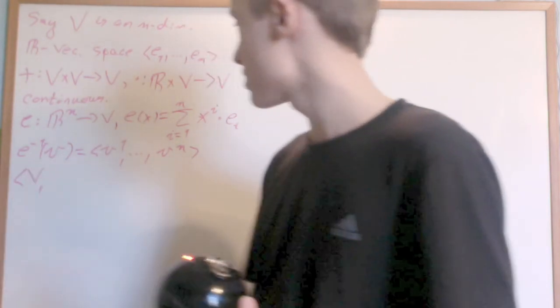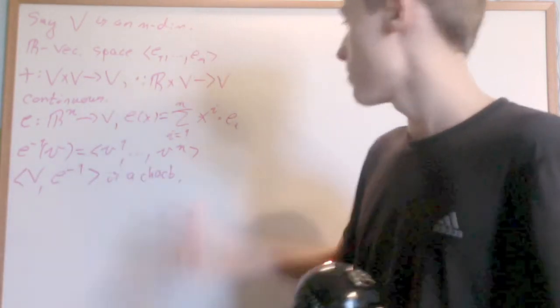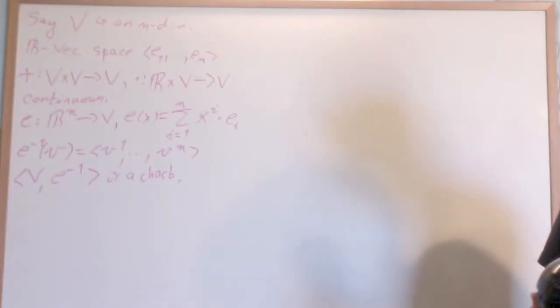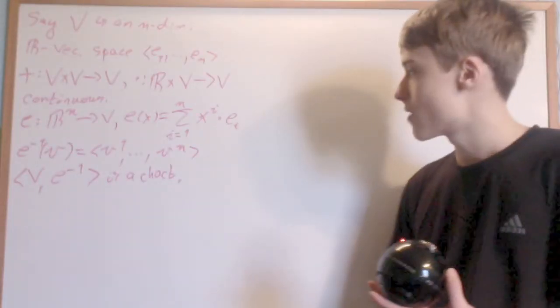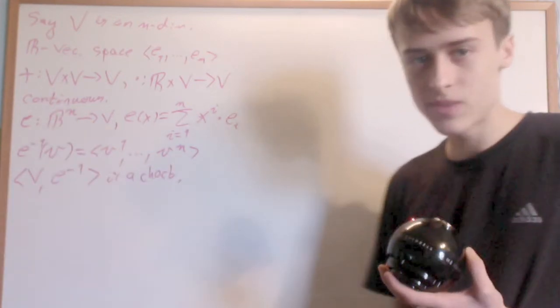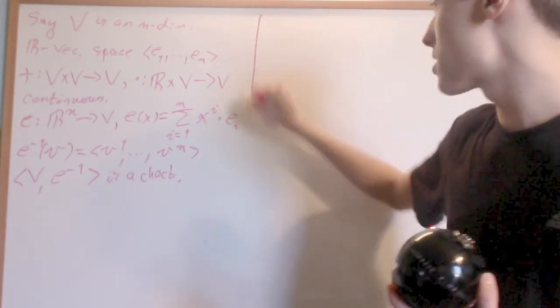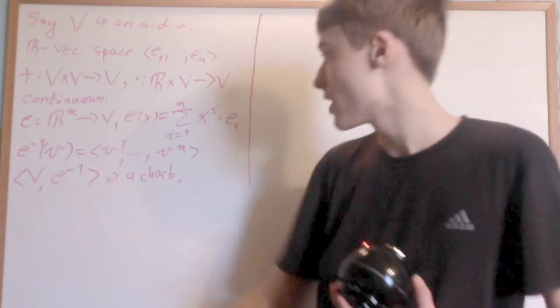I have it that V, the vector space, under the map E inverse is a chart, because V is an open set and E inverse is obviously a homeomorphism due to the fact that E is a homeomorphism.